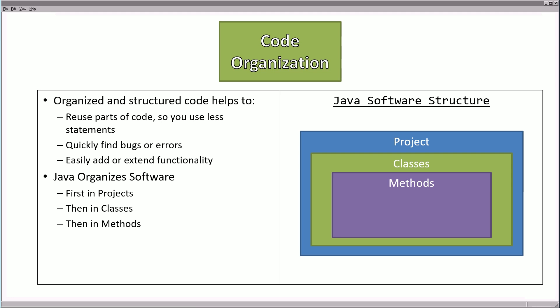In a previous lecture we started going over code organization. As we've started writing code it's become more and more complex, and we need to better organize statements so that we can reuse parts of code, quickly find bugs and errors, and easily add or extend functionality. Java organizes software into first projects, then classes, and finally methods.